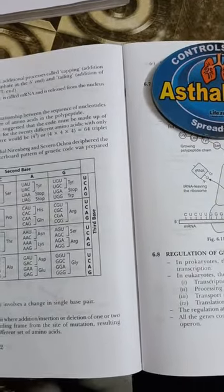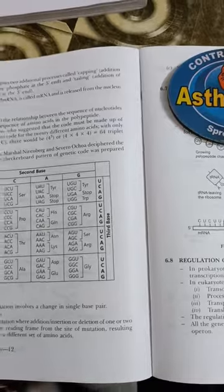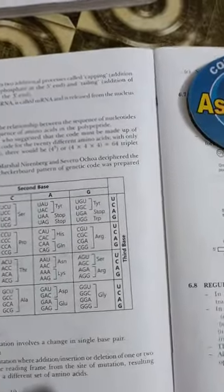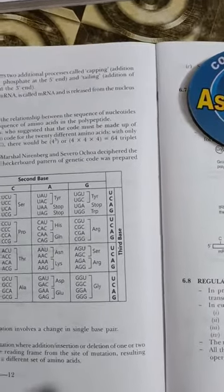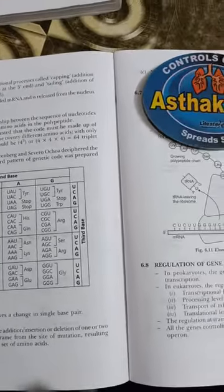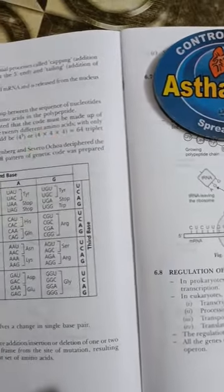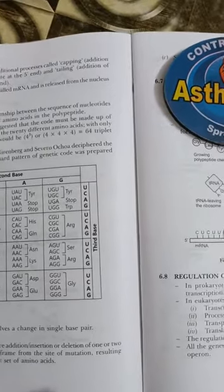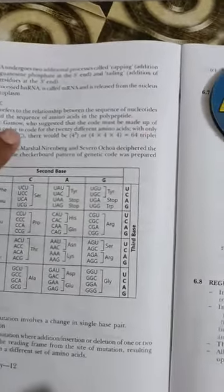The mRNA is responsible for the synthesis of protein, and proteins are made up of about twenty amino acids. These twenty amino acids combine to form proteins. The code must be made up of three bases in order to code for twenty different amino acids with only four bases: A, T, G, C. That's why we have four to the power of three equals 64 triplet codons.